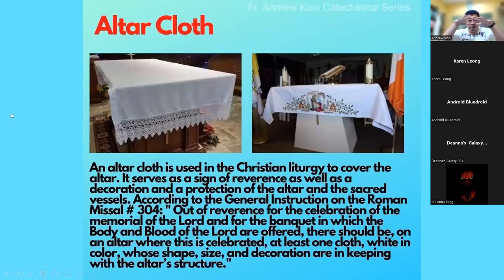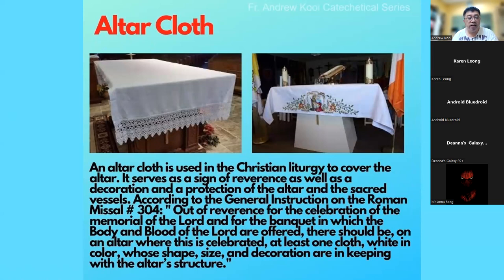Next we go to altar cloth. You need to put an altar cloth on the altar, and it would be made of a certain material — mostly cotton or some other material which will be able to protect the altar. Normally the altar cloth would be at least one layer. Some churches can afford two or more layers. Sometimes they might put a plastic on top to protect the altar when mass is not celebrated. The altar cloth needs to be white in color in most cases.